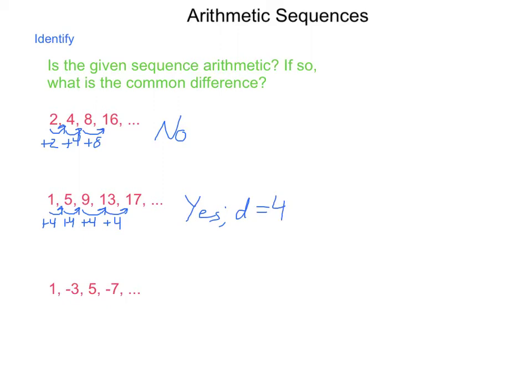Next. Is this one 1, negative 3, 5, negative 7 arithmetic? To move from 1 to negative 3, I subtract 4. From negative 3 to positive 5, I add 8. From positive 5 to negative 7, I'm going to subtract 12. So is this one an arithmetic sequence? Again, the answer is no, because we're not adding the same amount. Now if these were all positive or all negative, yes, we would have an arithmetic sequence. But because we're alternating positive and negative, we do not get that benefit.